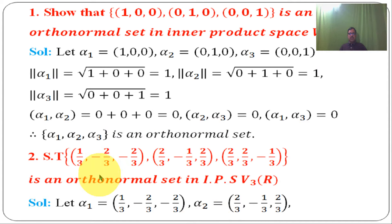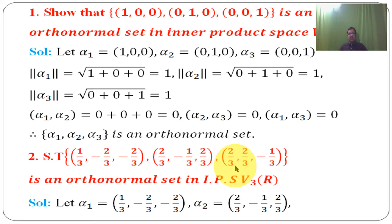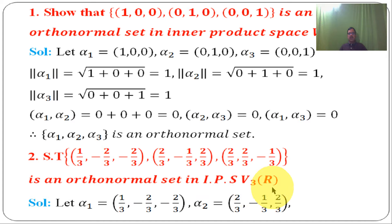Next problem: show that the set of vectors (1/3, -2/3, -2/3), (2/3, -1/3, 2/3), (2/3, 2/3, -1/3) is an orthonormal set in inner product space V3 over R. Solution: let alpha 1, alpha 2, alpha 3 be these vectors respectively.